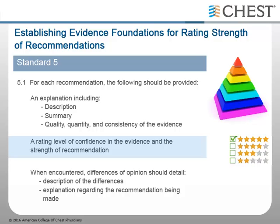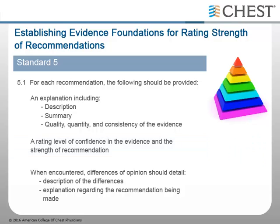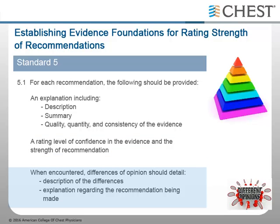CHEST guidelines meet these standards. Each recommendation in a CHEST guideline is followed by a grade, which encompasses two dimensions: first, the balance of benefits to harms, risks, or burdens, including confidence in the estimate of effect; and second, the level of evidence for the body of literature supporting the recommendations. The text of the manuscript includes a summary of the relevant literature as well as information relating to the quality and quantity of the evidence. Additionally, if there were any differences of opinion regarding the recommendation, a description of these differences should be provided.